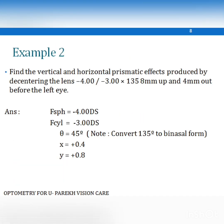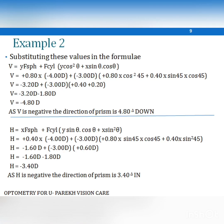In Example 2, the spherical and cylindrical powers are negative and the axis is 135° in front of the left eye. The spherical power is −4 diopters and the cylindrical power is −3 diopters. Since the axis is in binasal form for the left eye, θ = 180° − 135° = 45°. The horizontal deviation is 0.4 cm and the vertical deviation is 0.8 cm. Substituting these values, the vertical deviation results in −4.80 prism diopters in the base-down direction.